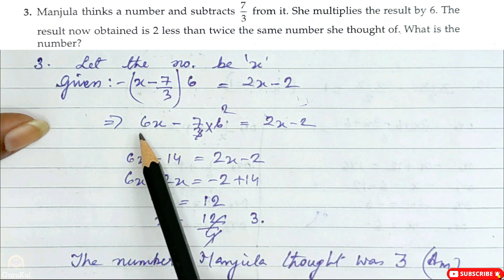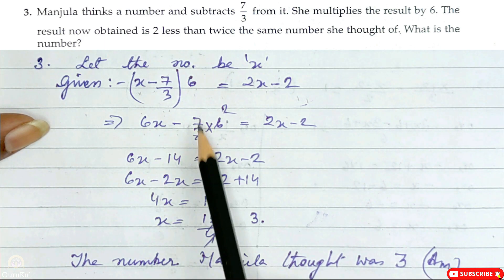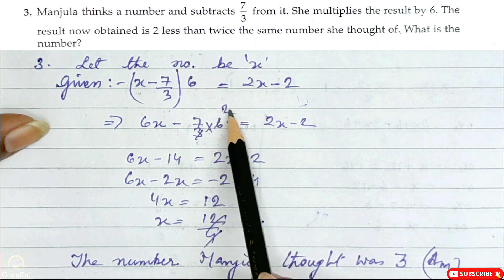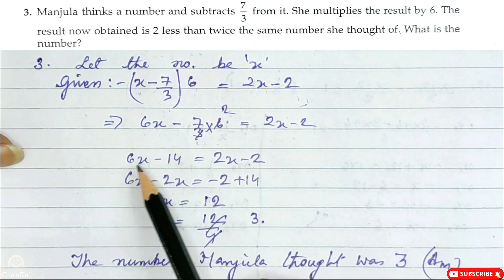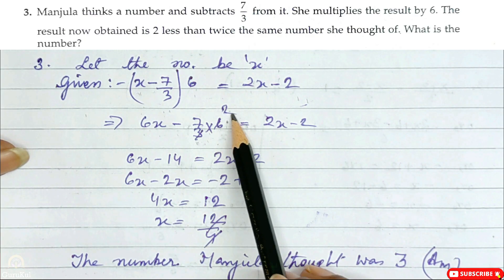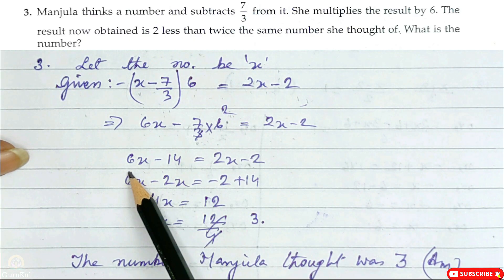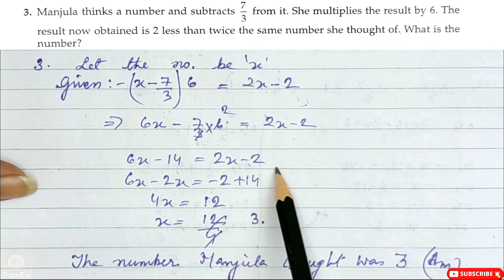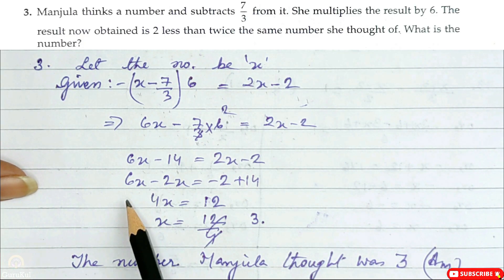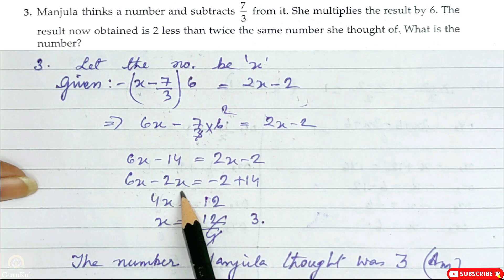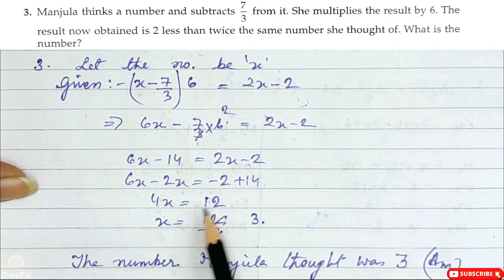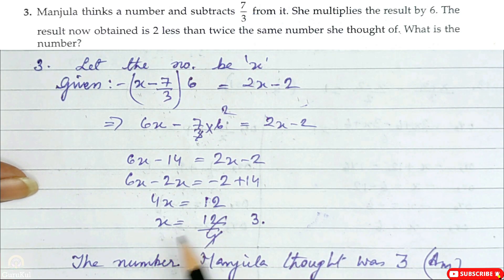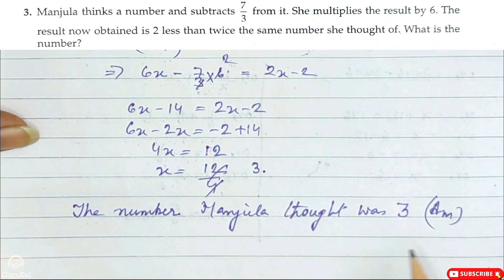Multiply 6: it becomes 6x minus (7/3 × 6) — which reduces — is equal to 2x minus 2. So 6x minus 14 is equal to 2x minus 2. Bring x to the left hand side: 6x minus 2x is equal to minus 2 plus 14. So 4x is equal to 12, or x is 12/4 which is 3. Hence the number Manjula thought of was 3.